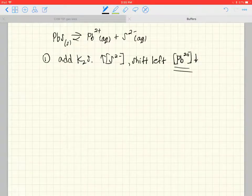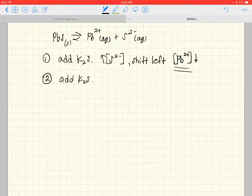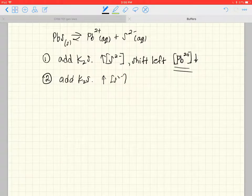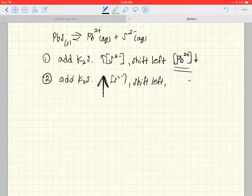Now continuing on with this problem, let's think about what would happen to the sulfide concentration. So again we're going to add potassium sulfide, which means we're increasing the amount of sulfide. Now this reaction would of course shift to the left and sulfide would drop down a little bit, but this increase is going to be much larger than the decrease.